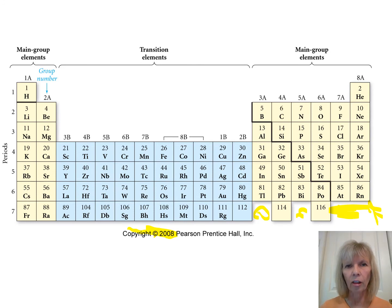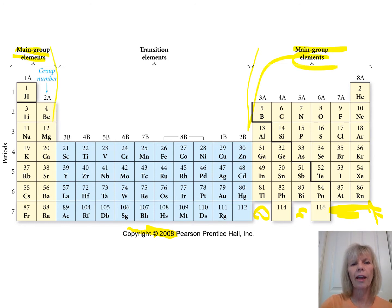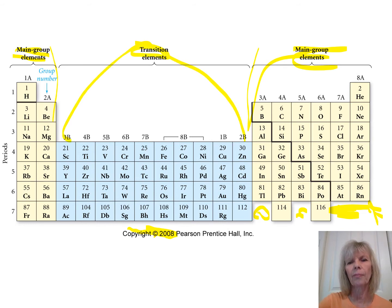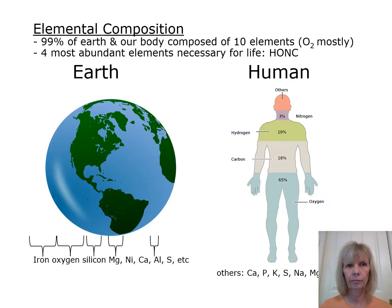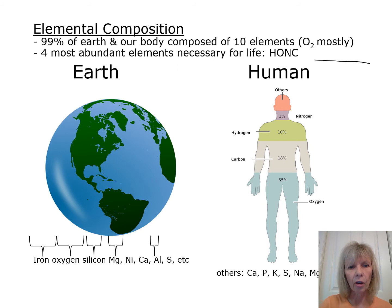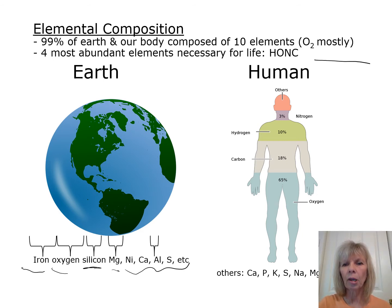On the periodic table, we can classify elements as main group elements — shown in yellow, numbered 1A, 2A, then skipping the transition elements in the middle to 3A through 8A. We'll focus a lot on main group elements and transition elements in this class. 99% of the earth and our bodies are composed of just 10 elements. Oxygen is the most abundant. The earth is composed mostly of iron, oxygen, silicon, and magnesium, plus smaller amounts of other elements.